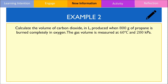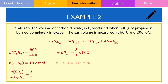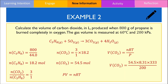In the second example, the combustion reaction is carried out under non-standard conditions. I reuse the same chemical equation for the combustion of propane. From here, we calculate the moles of propane by dividing 800 by its molar mass, giving 18.2 moles. The number of moles of carbon dioxide produced is 3 times that of propane, hence 54.5 moles. To calculate the volume, we use the gas equation rearranged to solve for V, and substituting the values gives 755 litres.